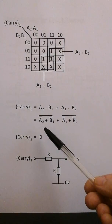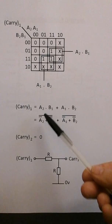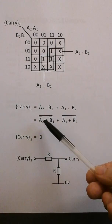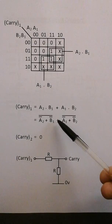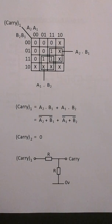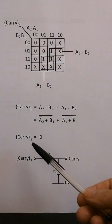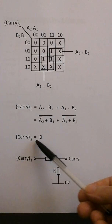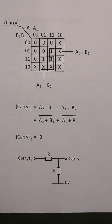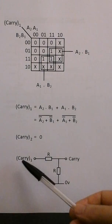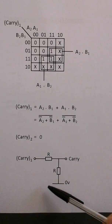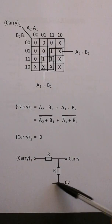I'm going to use De Morgan's theorem to transform this AND into a NOR. So that becomes NOT(a2) NOR NOT(b1), OR NOT(a1) NOR NOT(b2). As stated, carry2 is always zero, so carry2 equals zero. The resistor network has carry1 feeding the carry input, and carry2 is connected to zero volts.